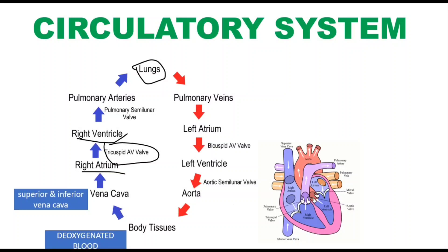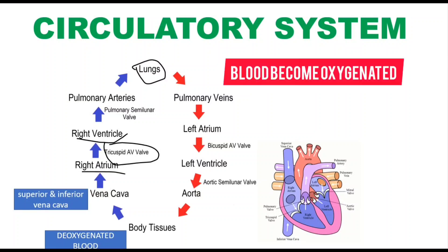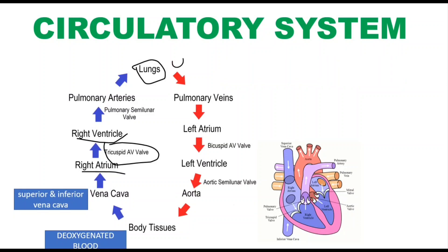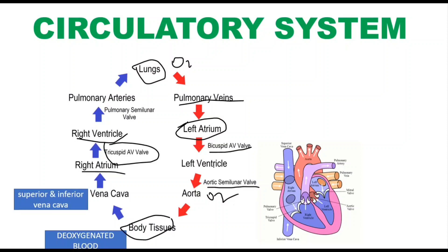In the lungs, the blood unloads CO2 and loads oxygen. Oxygenated blood then enters into the left atrium through the pulmonary veins. From the left atrium, blood enters the left ventricle through the bicuspid valve. From the left ventricle, the oxygenated blood enters into the aorta through the aortic semilunar valve, and from the aorta the oxygenated blood is distributed to the whole body.